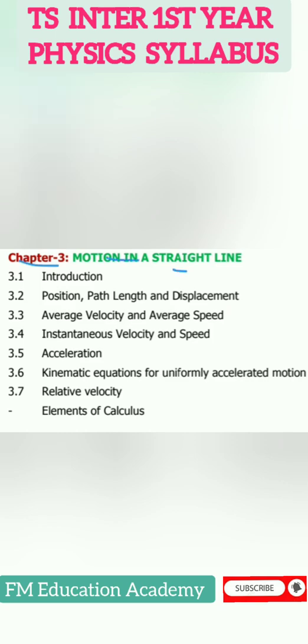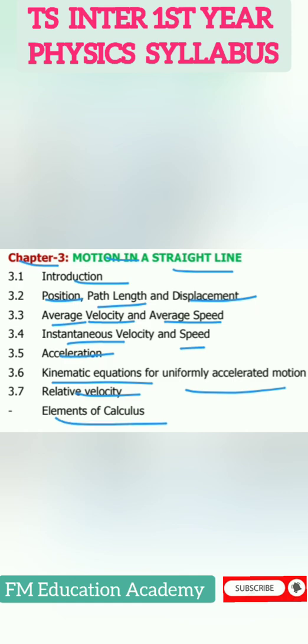Chapter 3, Motion in a Straight Line: Introduction, position, path length and displacement, average velocity and average speed, instantaneous velocity and speed, acceleration, kinematic equations for uniformly accelerated motion, relative velocity, and elements of calculus.